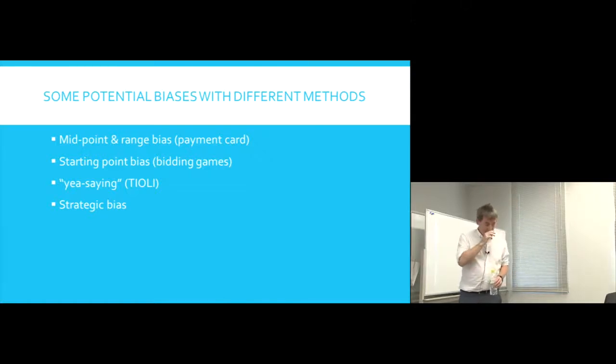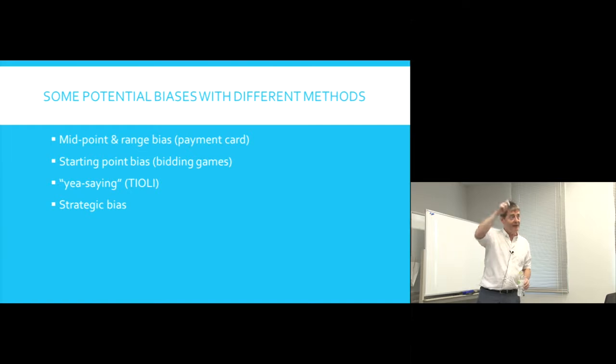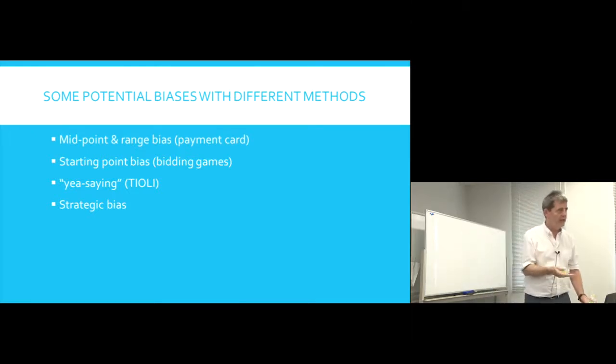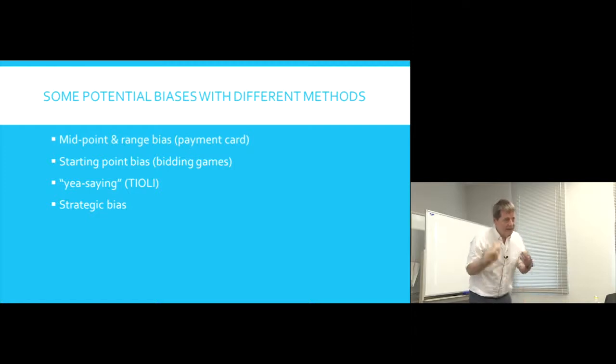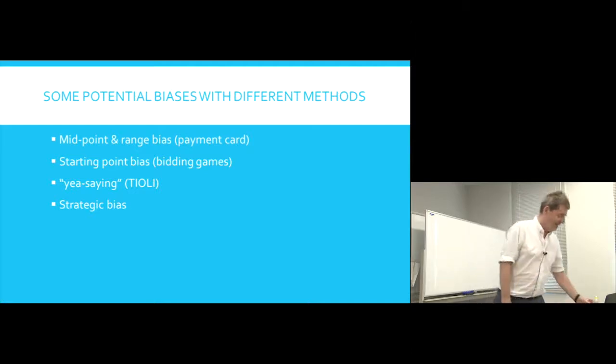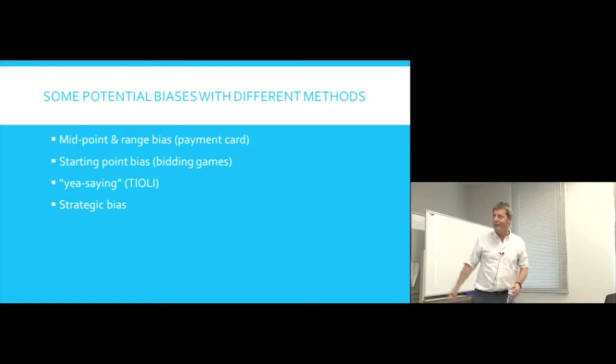Starting point bias. Clearly, starting point bias is a problem. In the Burkina Faso experiment, because we randomized the starting points, we were able to test it. And we did find starting point bias. So if you started with a low bid, a low value, you ended up at a relatively low value. If you started at a high value, you ended up at a relatively high value. Because of course, people don't want to keep saying yes, yes, yes, or no, no. They learn that the only way to stop the questions is to change the answer. And so definitely that does happen, particularly in bidding games.